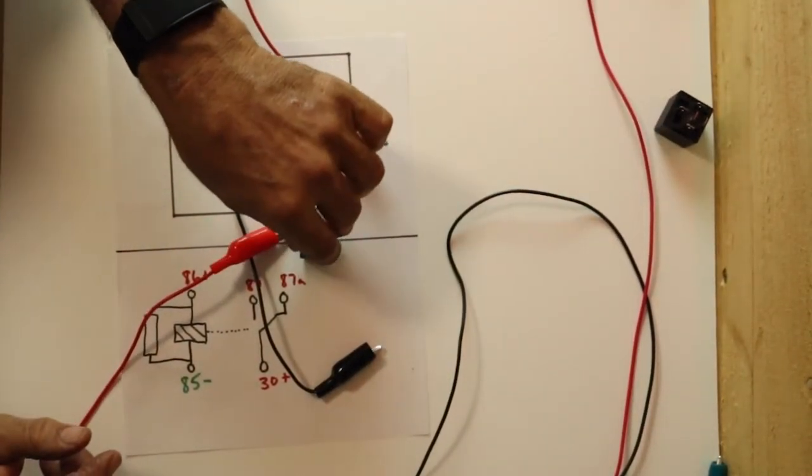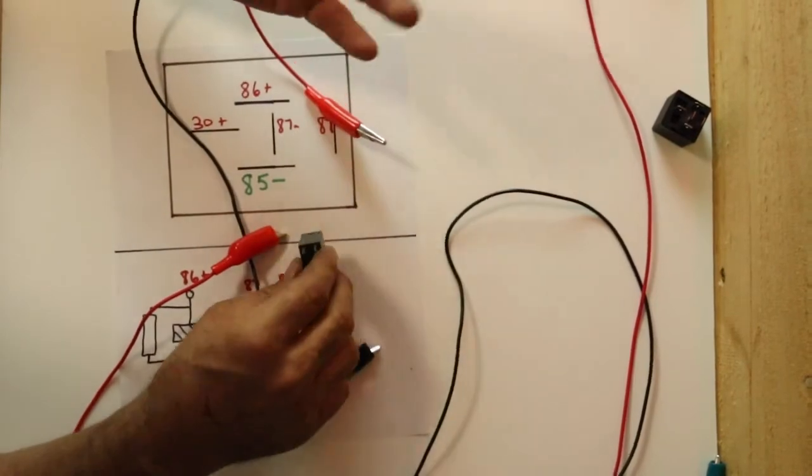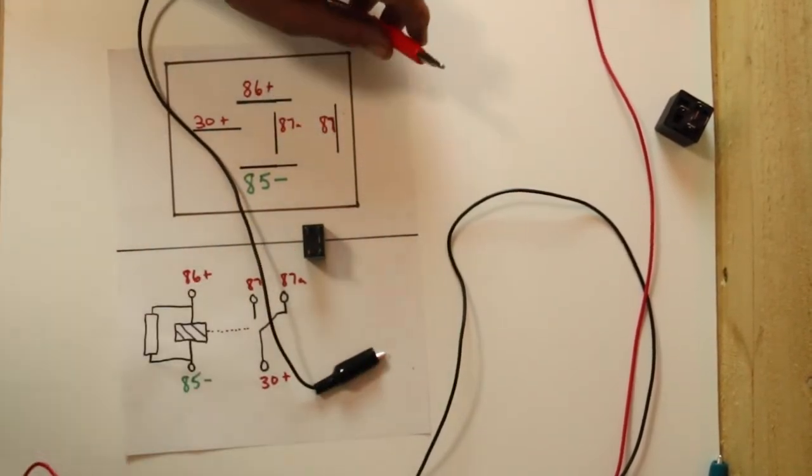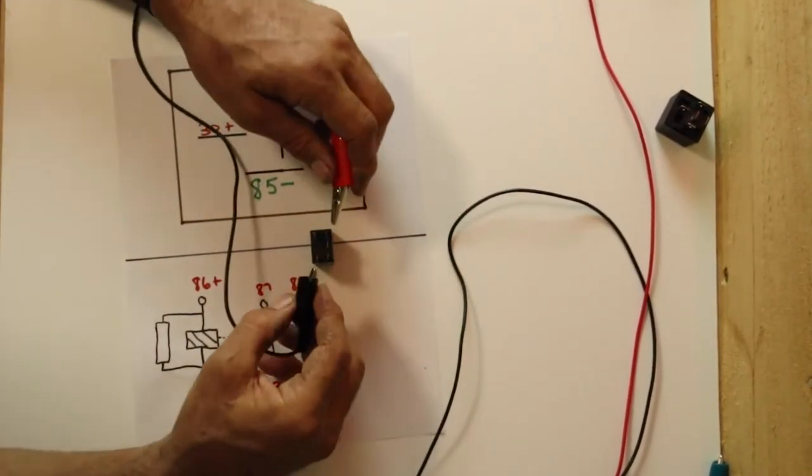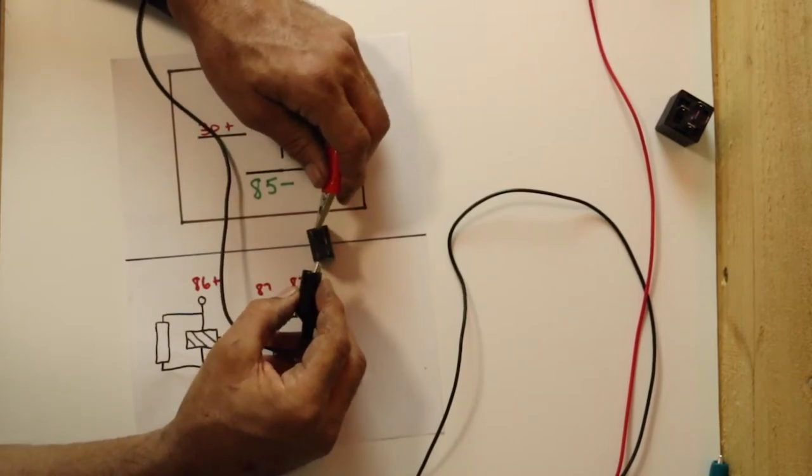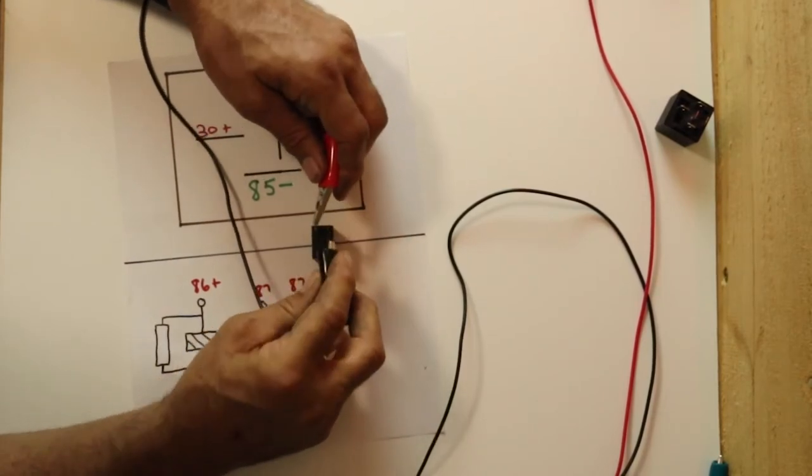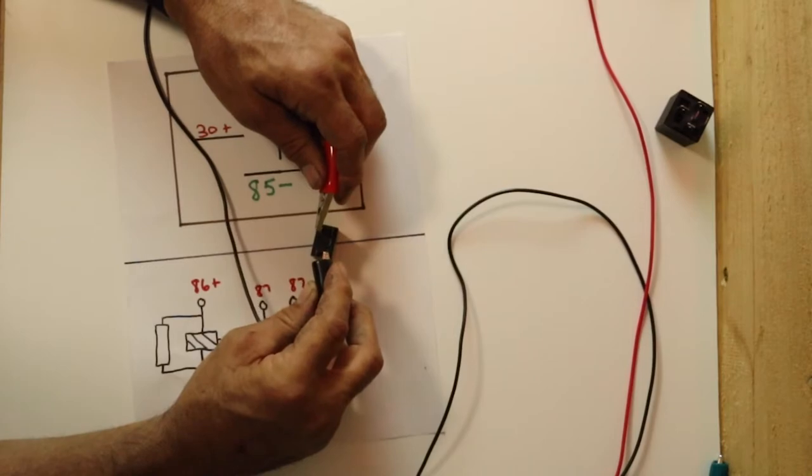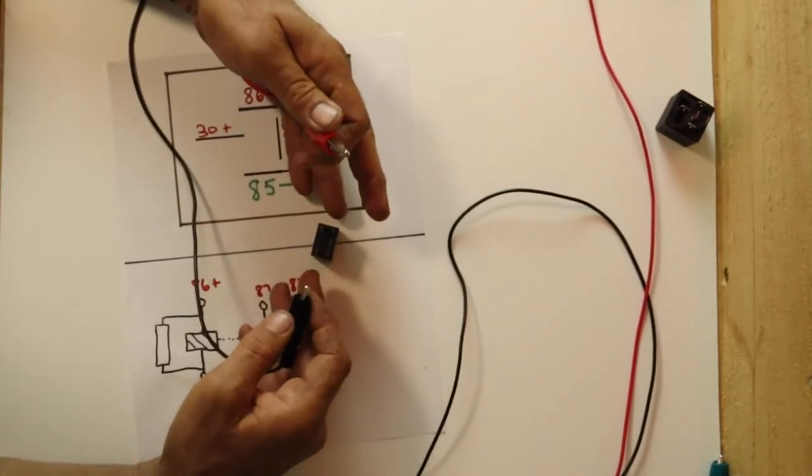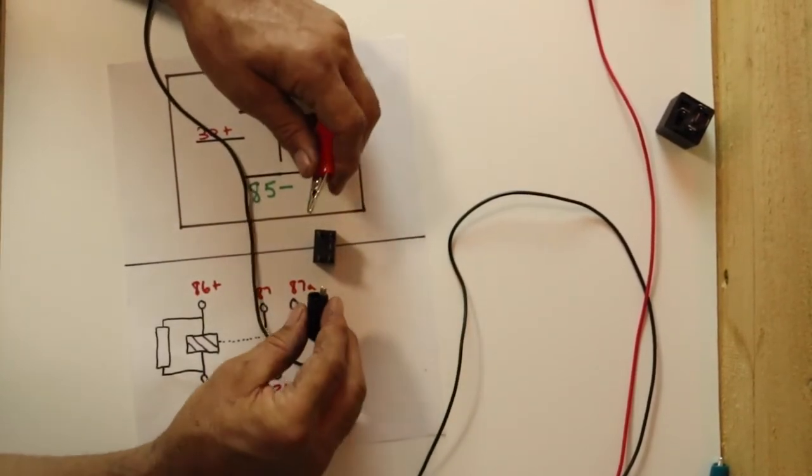It's the same thing when you're doing a four-prong relay, and it doesn't have any numbers. The easiest way to find it is you touch until you hear it activated. Touch different combinations. Alright, I hear it activated. If you touch all the combinations and it doesn't activate, it's a bad relay.